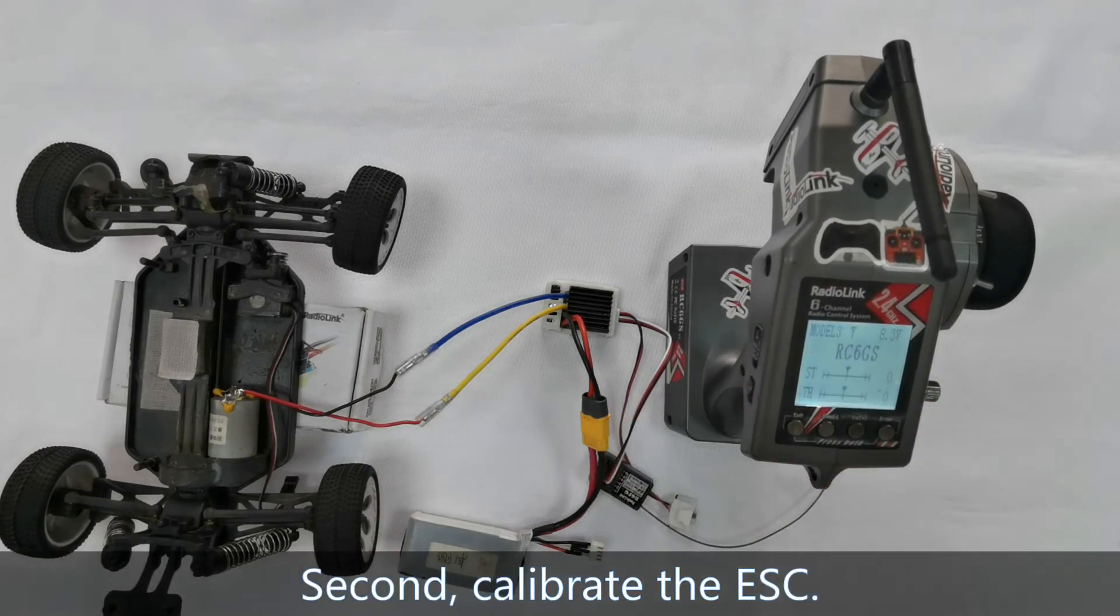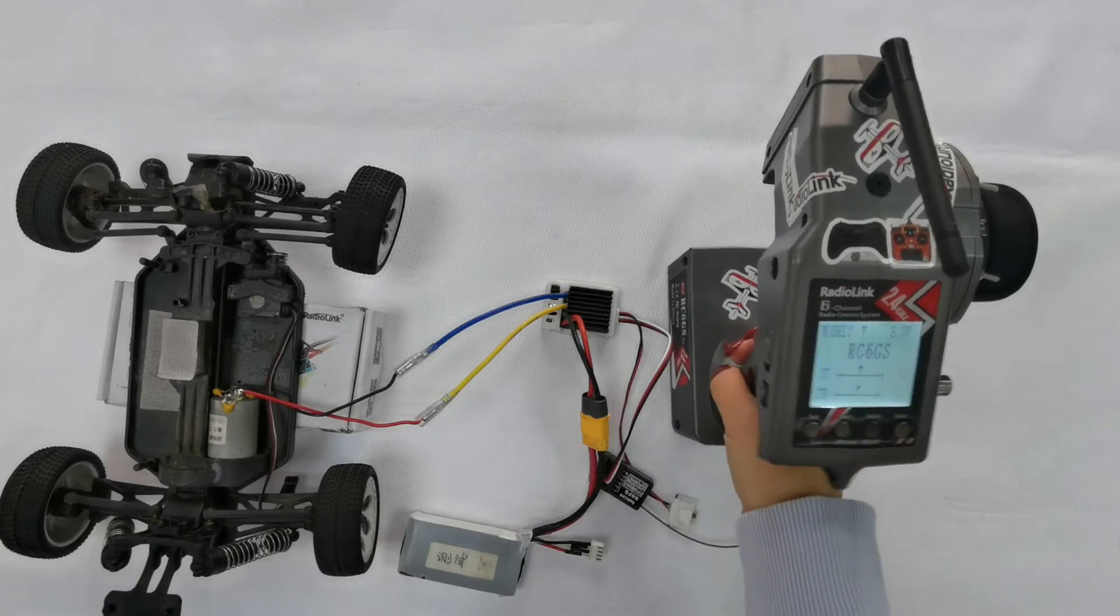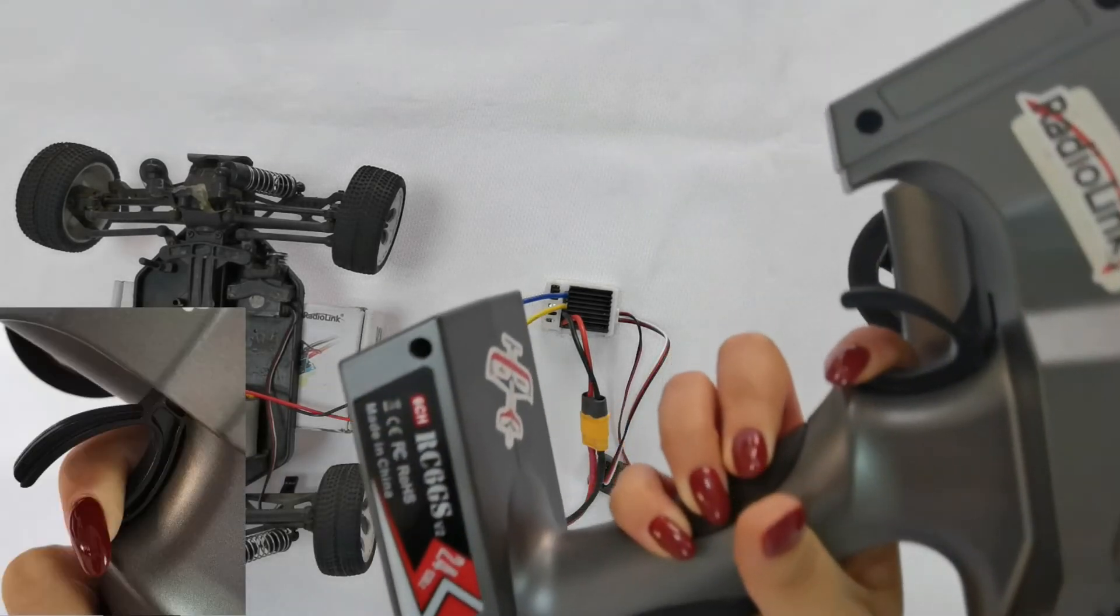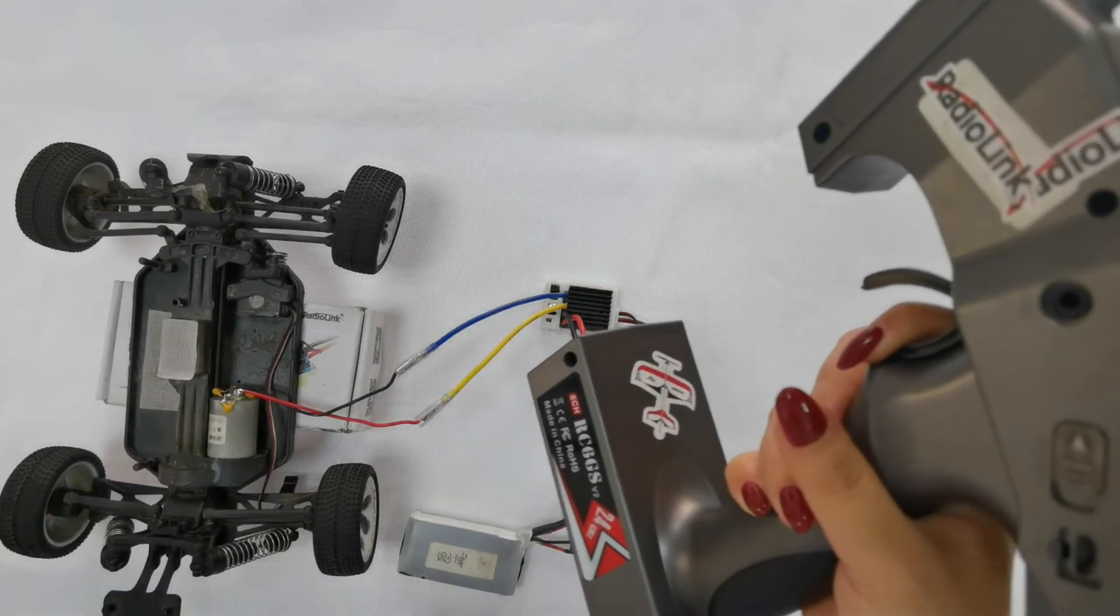Now calibrate the ESC. Push the throttle to the highest position and keep it. Then turn on the control switch of ESC.